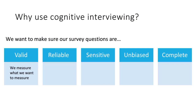When designing a questionnaire or survey, we want to make sure that it is a good instrument. To have a good survey or questionnaire, it needs to be the following. Firstly, our questions need to be valid, in that the questions measure what we want them to measure and only that. Cognitive interviewing can help us ensure our questions are valid.